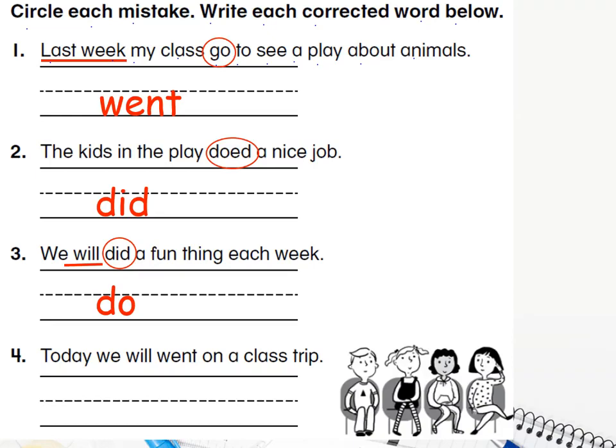Number four: 'Today we will went on a class trip.' 'Today' means present, and 'will' points to future — but 'went' is past tense, so it's wrong here. The word 'today' is our clue, and the wrong usage is 'went.' Instead we have to say: 'Today we will go on a class trip.'